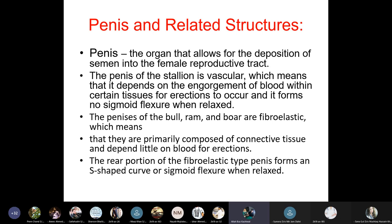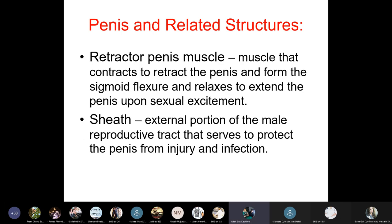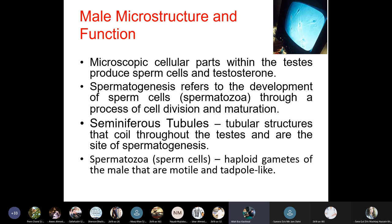The penises of the bull, ram, and boar are fibroelastic, primarily composed of connective tissue and depend little on blood for erection. The rear portion of the fibroelastic penis forms an S-shaped curve known as the sigmoid flexure when relaxed. The retractor penis muscle contracts to retract the penis and form the sigmoid flexure, and relaxes to extend the penis upon sexual excitement. The sheath is the external portion that protects the penis from injury and infection.